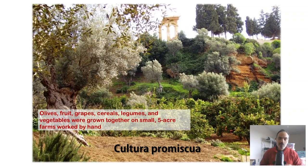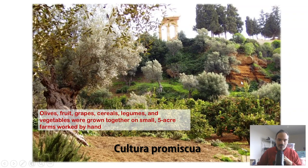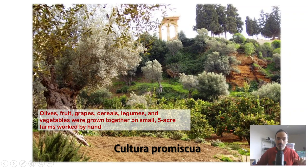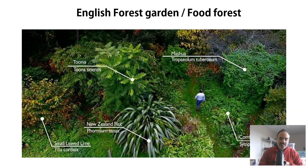Closer to home, this is a cultura promiscua — a system the Romans spread around the Mediterranean, here in Sicily. Terraced in this case, with an interplay of olives, fruit trees, grapes, cereals, legumes, and vegetables all grown on the same small five-acre farms, mostly worked by hand. Highly diversified, natural-looking, adapted to the landscape, and using the slope for microclimate and water management — this was practiced in western cultures before mechanization.